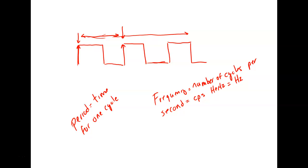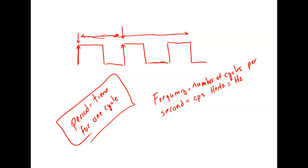The problem is that most oscilloscopes — the new ones will do it for you — but most oscilloscopes measure time. These two quantities, time and frequency, are inversely proportional. Anytime we use the term inversely proportional, it means we can go between the two by taking the reciprocal, which is one divided by a number.